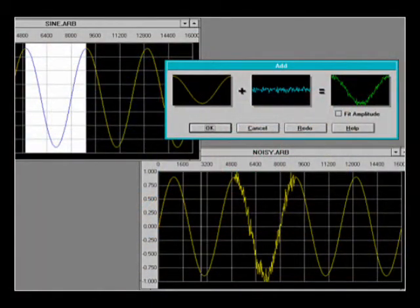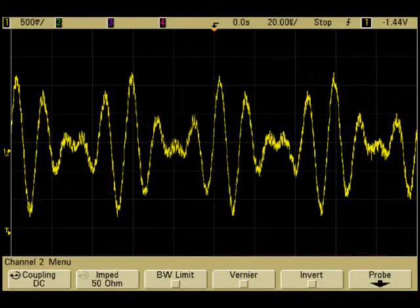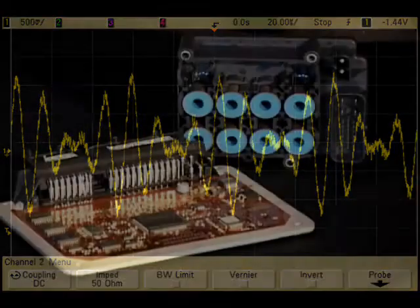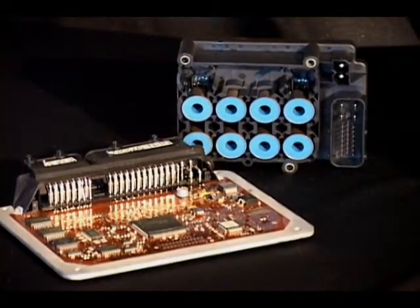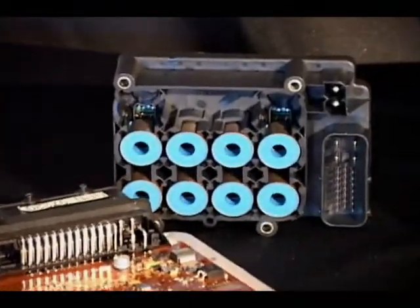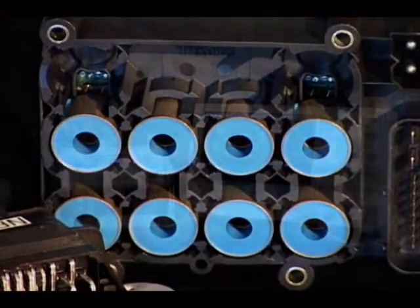Waveforms can also be created and modified using the included BenchLink ARB software. For example, an ARB could be created to simulate wheel sensor signals, which could then be used to test an ABS braking module.